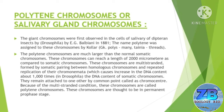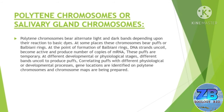The DNA content of somatic chromosomes — they maintain attachment to one another by a common point called the chromocenter. Because of the multi-stranded condition, these chromosomes are called polytenic chromosomes. These chromosomes are thought to be in a permanent prophase stage.